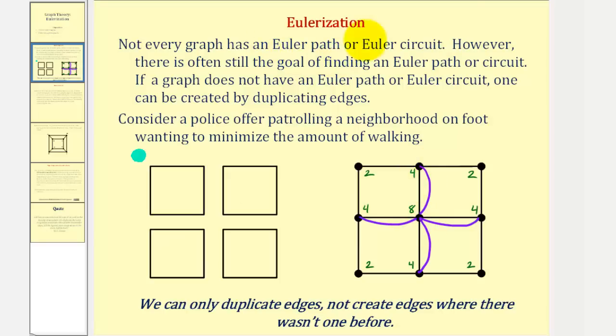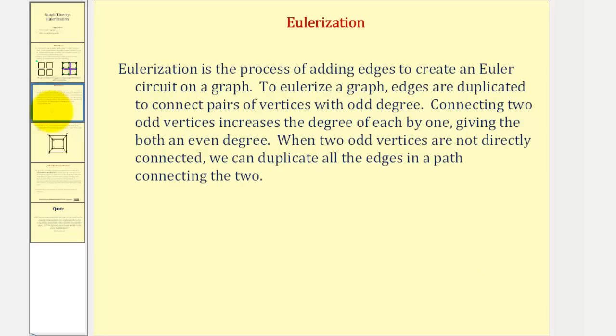Let's go ahead and formalize the Eulerization process. Eulerization is the process of adding edges to create an Euler circuit. It can also be used to create an Euler path. To Eulerize a graph, edges are duplicated to connect pairs of vertices with odd degree. Connecting two odd vertices increases the degree of each by one, giving both an even degree.